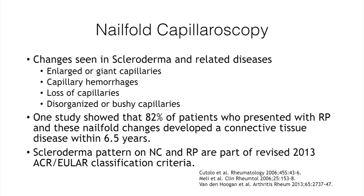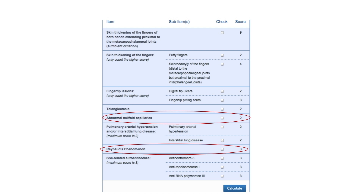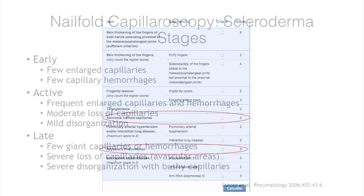One study looked at patients who had Raynaud's phenomenon and these nailfold capillaroscopy changes, followed over the next six and a half years, and 82% of those patients did go on to develop overt connective tissue disease. So nailfold capillaroscopy is really helpful in monitoring patients with Raynaud's phenomenon who are at high risk for developing scleroderma. Both Raynaud's phenomenon and abnormal nailfold capillaroscopy are now considered part of the classification criteria for systemic sclerosis.